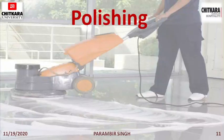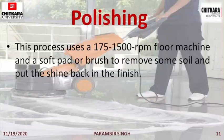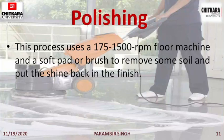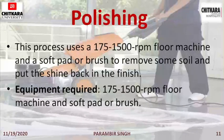Next is polishing. This process uses a 175 to 1500 RPM floor machine and a soft pad or a brush to remove some soil and put the shine back in the finish. Equipment required is a 175 to 1500 RPM floor machine.